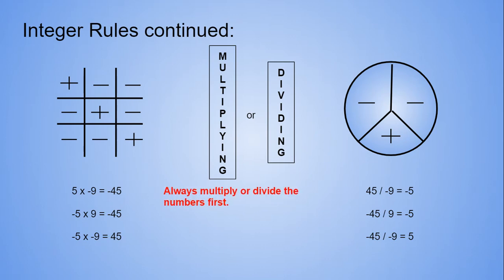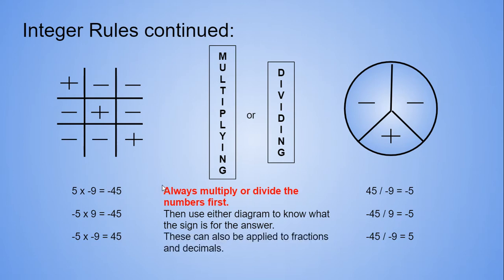Always multiply or divide the numbers first. So in an example like this, I'm going to multiply 5 times 9 to get 45. Then I'm going to use the diagram to see what the sign is for my answer. These also can be applied to fractions and decimals.